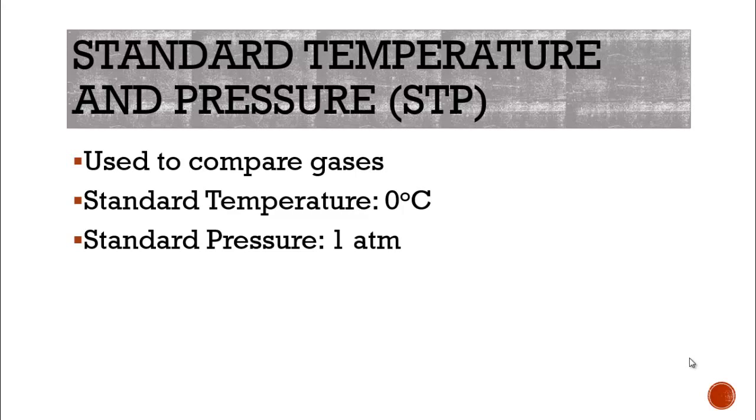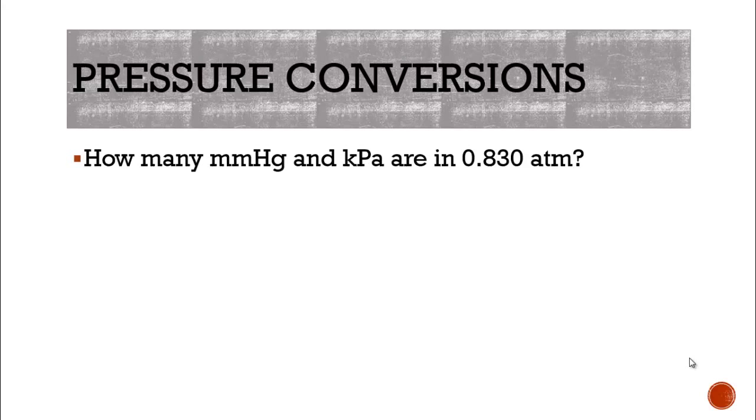Now, because there are so many different measurements of pressure, and pressure can be affected by volume and temperature and how many particles you have, we usually have a standard for temperature and pressure. And this is STP, standing for Standard Temperature and Pressure. So this is used to compare gases, so that if we're comparing one gas to another, we take out all those other factors and we compare it at the same exact pressure and temperature. So standard temperature is going to be 0 degrees Celsius, and standard pressure is going to be 1 atmosphere.